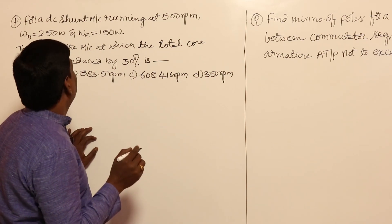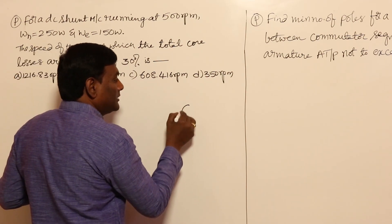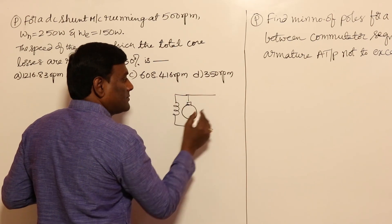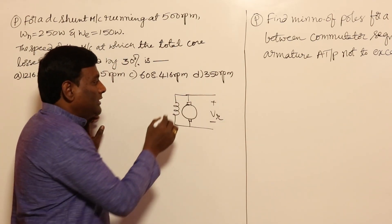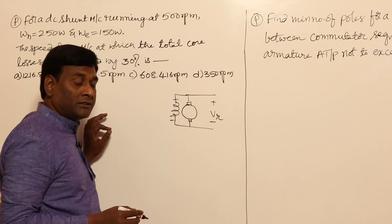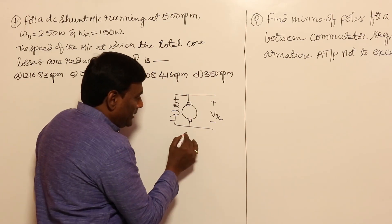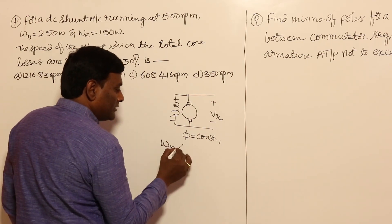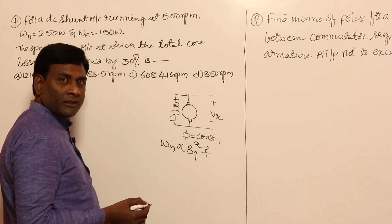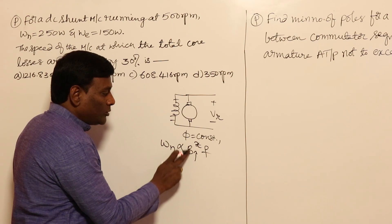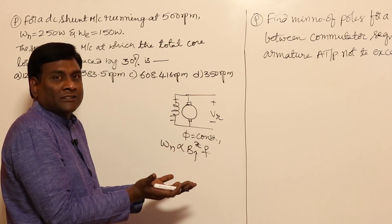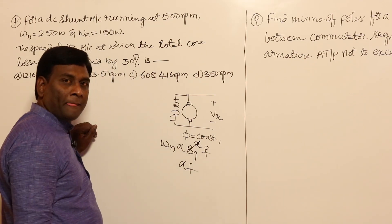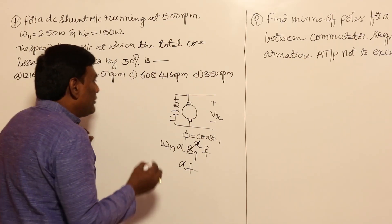For a shunt machine, the rated voltage is supplied, so the shunt field current is constant and therefore the shunt flux is constant. Now, hysteresis loss is directly proportional to B_max to the power x, multiplied by frequency f. Since flux is constant and the machine dimensions are fixed, flux density B_max is also constant — so hysteresis loss is directly proportional to frequency.